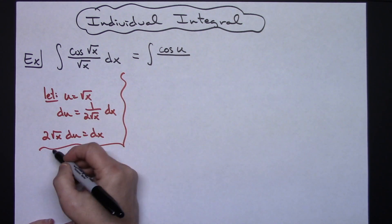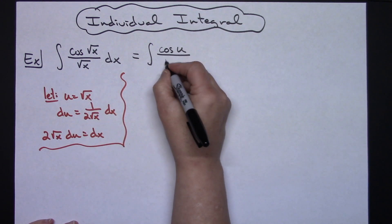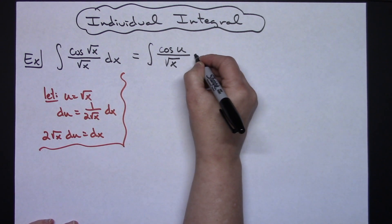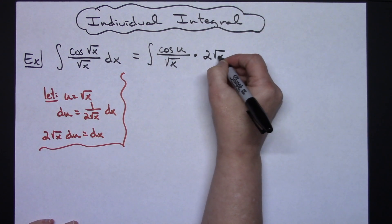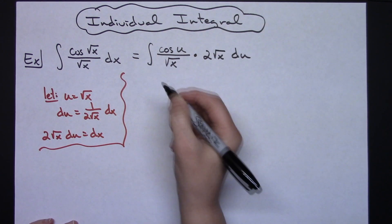So since I am going to have a square root of x that needs to be crossed out, I think I'm going to go ahead and leave that as square root of x, and then substituting in I'll have 2 square root of x du substituting in for that dx.